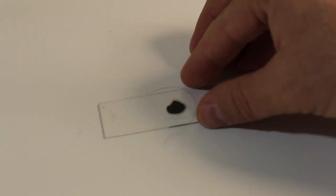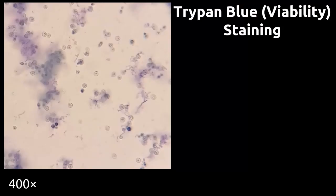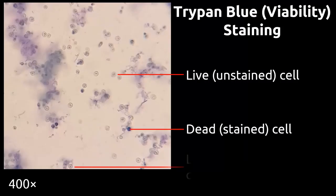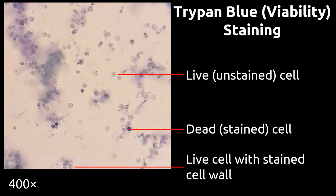I would recommend for viability staining using about a 400X magnification. One important thing when counting live versus dead cells is to not count any cells where only the outermost edge of the cell is stained.